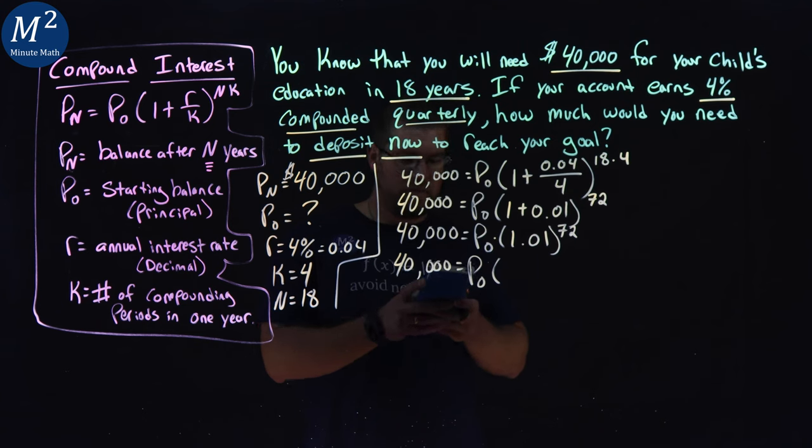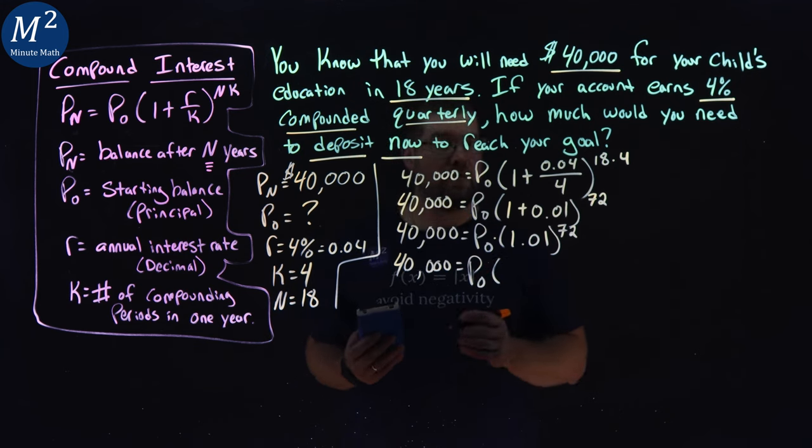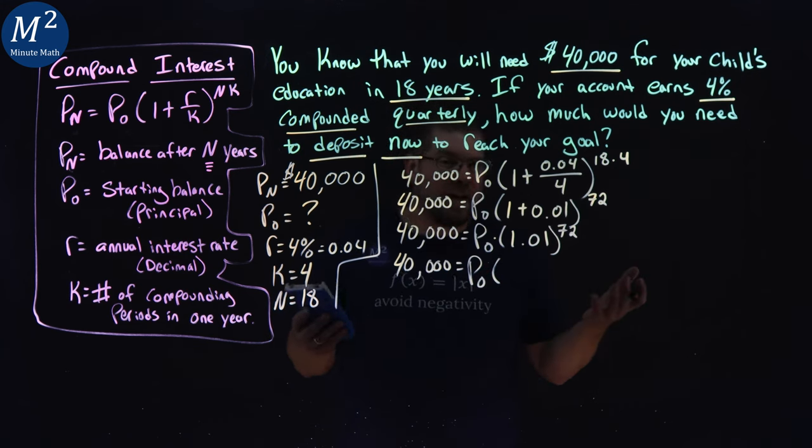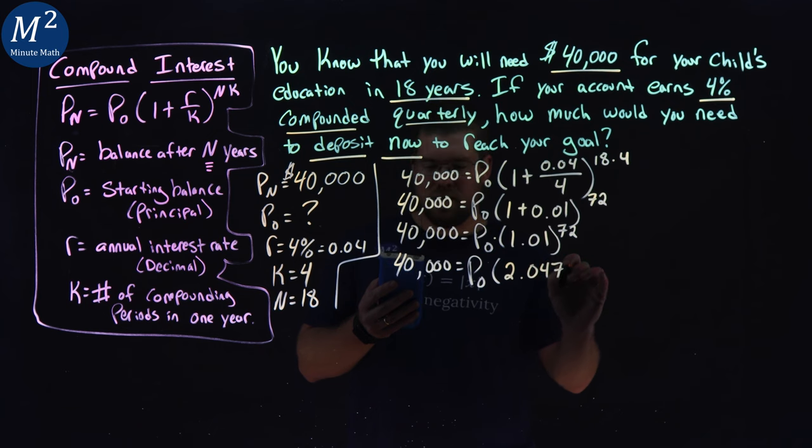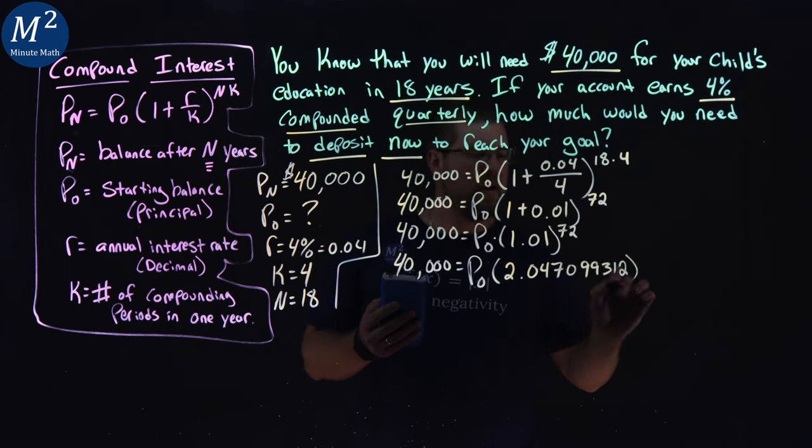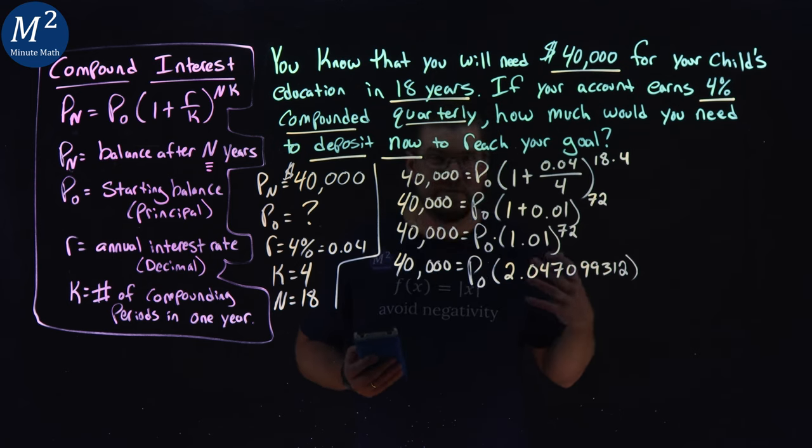So 1.01 to the power of 72, now this decimal goes on forever. Generally, I try to do at least three, but if I have all nine or eight decimals, I'm going to use them. It only takes a little bit longer to write that down. 2.047099312. And by using all this, it will make your answer more accurate.